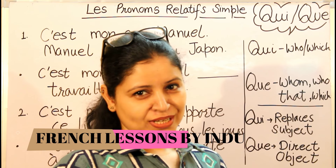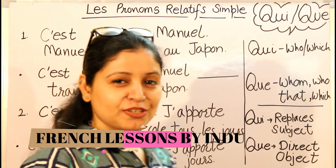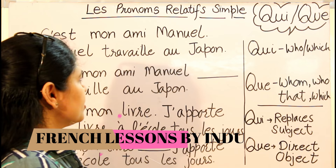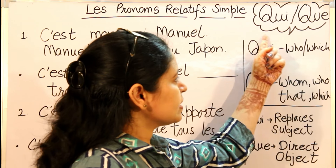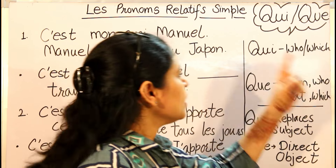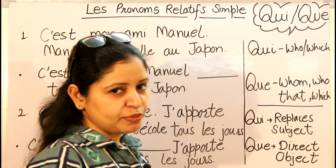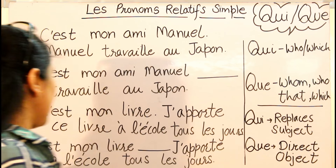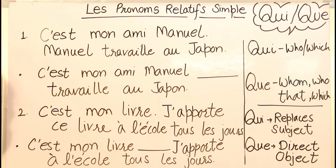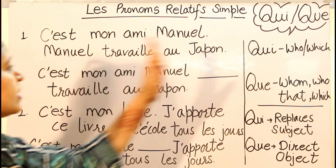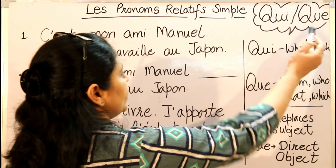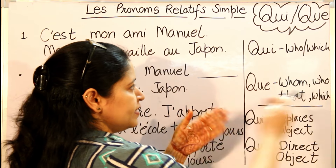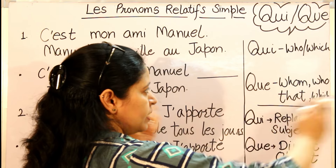Welcome to your French class. Today's topic is 'les pronoms relatifs simples'. Here we have two words: QUI and QUE. These two words are basically pronouns and their function is to relate or join two sentences meaningfully, hence they are called relative pronouns. We basically join them in between two different sentences to make a complete single statement.